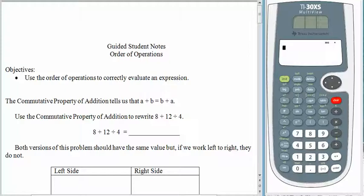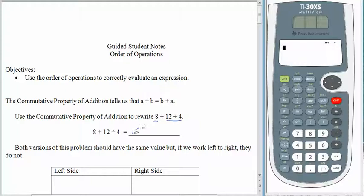You might remember the commutative property of addition that says you can add numbers in any order. For example, 5 plus 3 gives you exactly the same thing as 3 plus 5. If we wanted to use the commutative property of addition to rewrite a larger expression like 8 plus 12 divided by 4, the first thing we need to do is identify the addends — the things being added. So we're adding 8 to 12 divided by 4, and the commutative property says we can change the order of the addends.